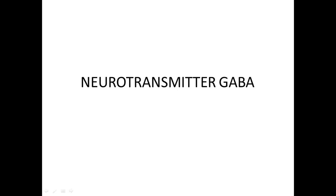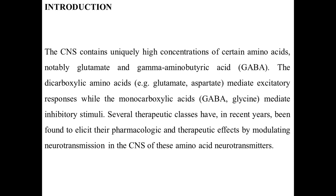Today we are basically concentrating on the neurotransmitters involved in the CNS or central nervous system. In the CNS there are different types of neurotransmitters — glutamate, which is excitatory, and GABA, which is inhibitory. Today's topic is the inhibitory neurotransmitter GABA, or gamma-aminobutyric acid. The CNS contains uniquely high concentrations of certain amino acids, notably glutamate and GABA. Dicarboxylic amino acids like glutamate and aspartate are responsible for excitatory activity, while monocarboxylic amino acids like GABA and glycine mediate inhibitory stimuli.